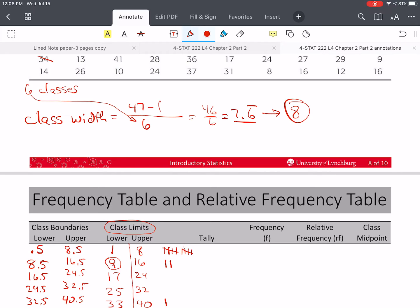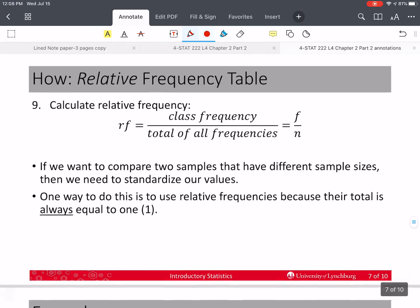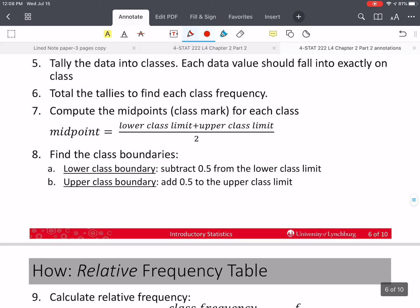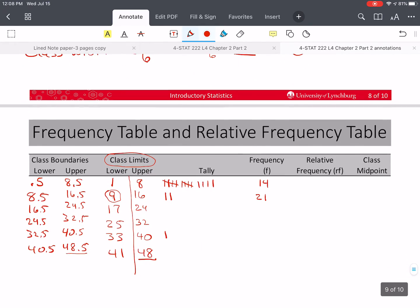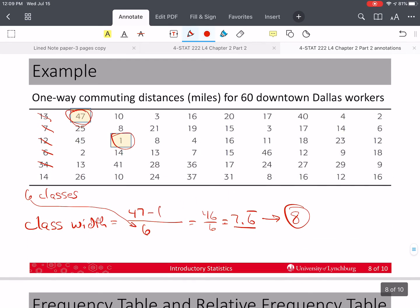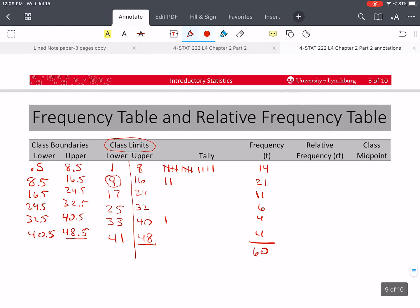And it turns out that we have 14. I can keep going. I have plenty of room. So we have 14. Then we have 21. And let's look back up here at the table. 11, 6, 4, and 4. And if we add these up, these total frequencies had best equal the total number of values in our data set. And we have 10 across and 6 down. So 6 times 10 is 60. And this matches.